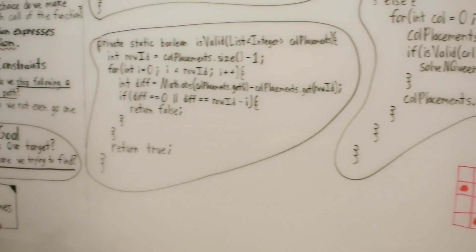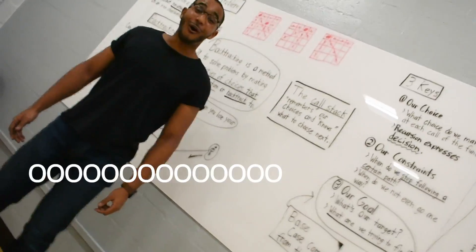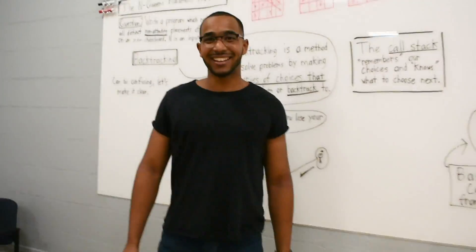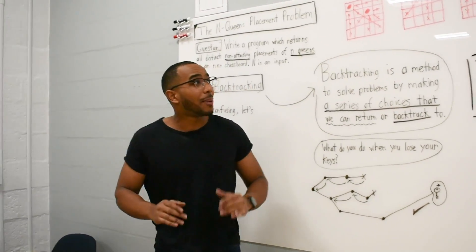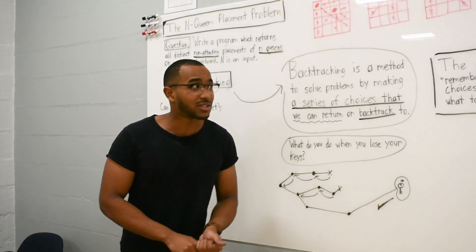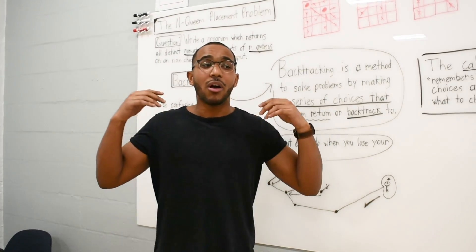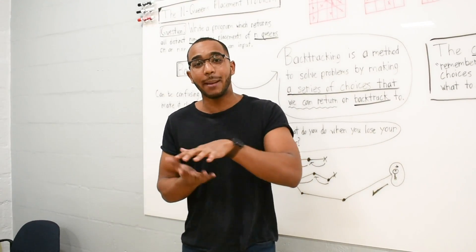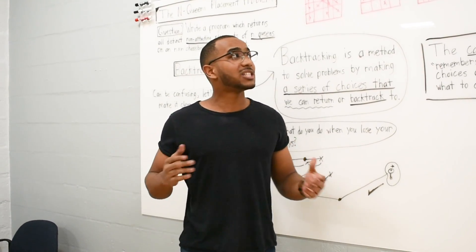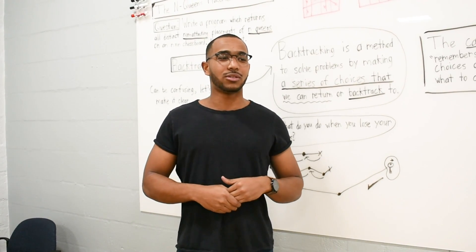So this is basically the N-Queens problem. It's all about the three keys we talked about: make a choice, know your constraints, and know your goal — know what the recursion is going towards. Every call of the function needs to be making a little more progress toward that base case, which is your answer. That is basically the N-Queens problem. It's a LeetCode hard, but if you really understand what's going on, the concepts aren't too bad.